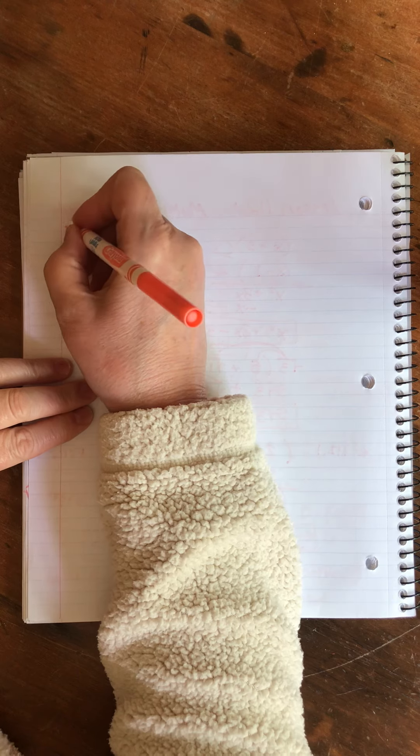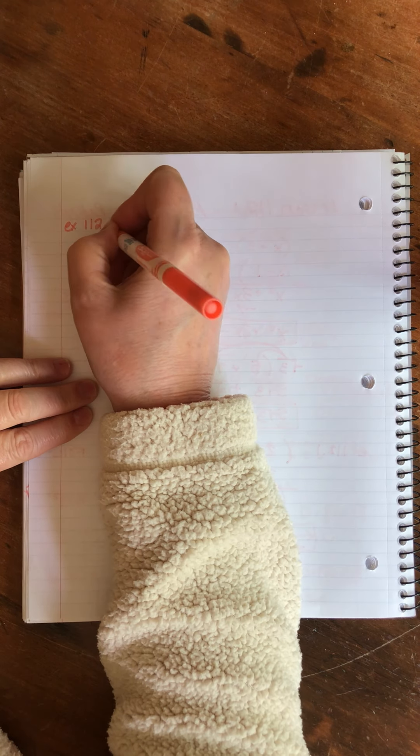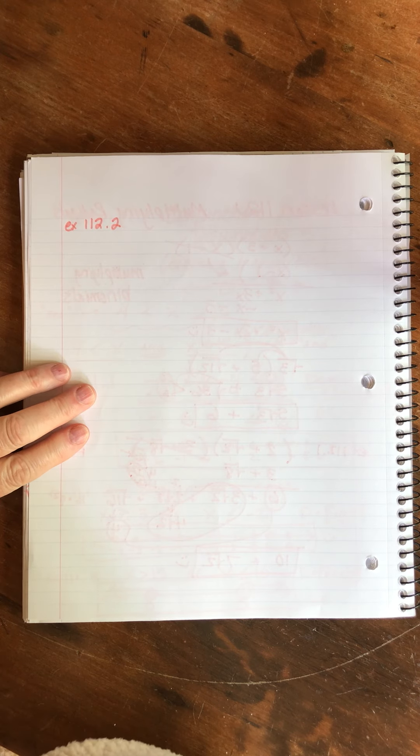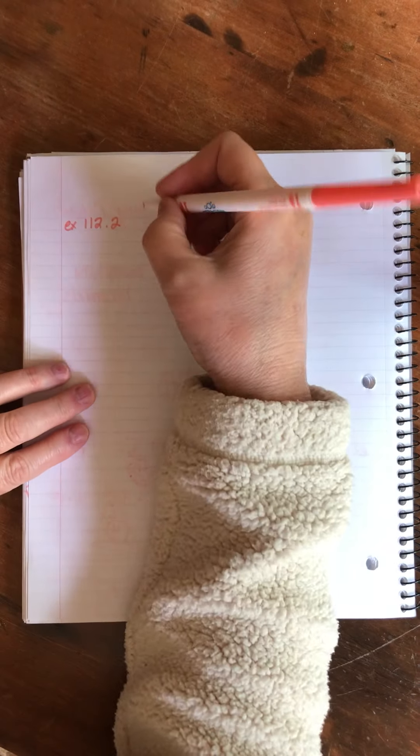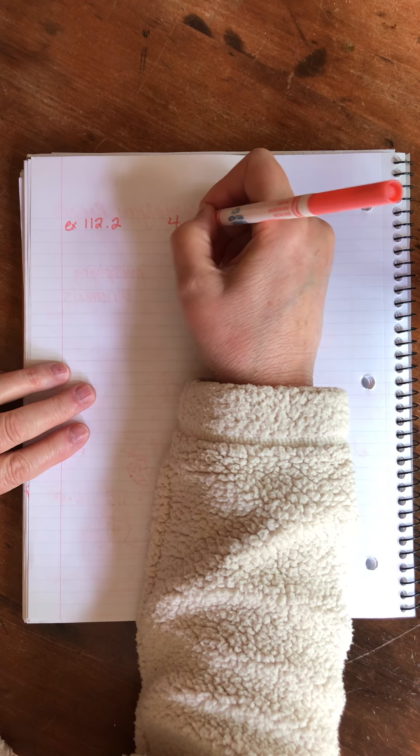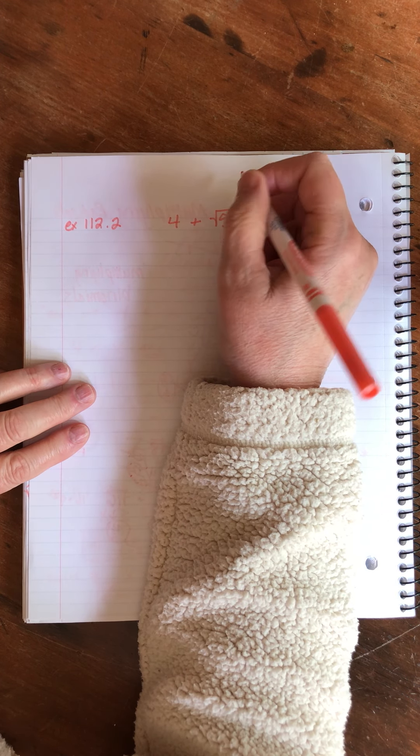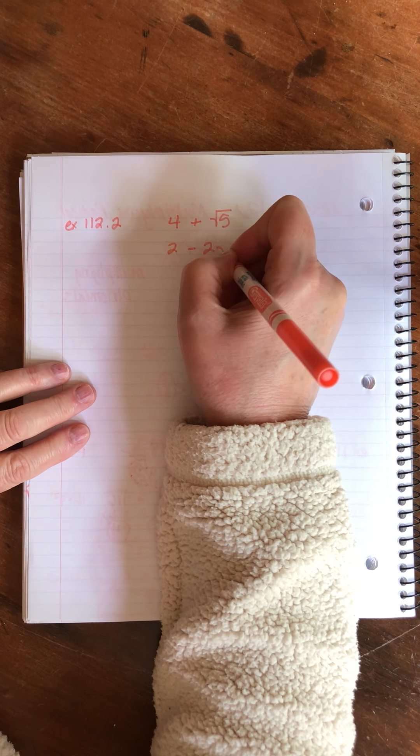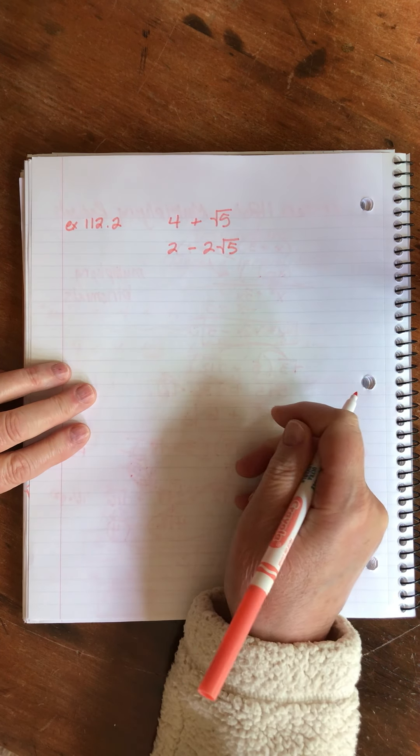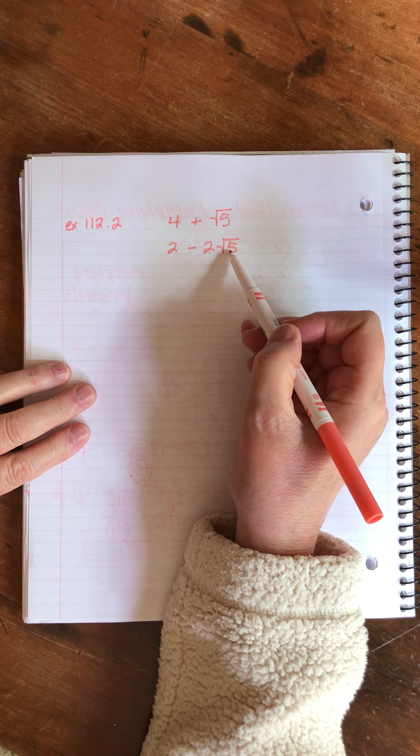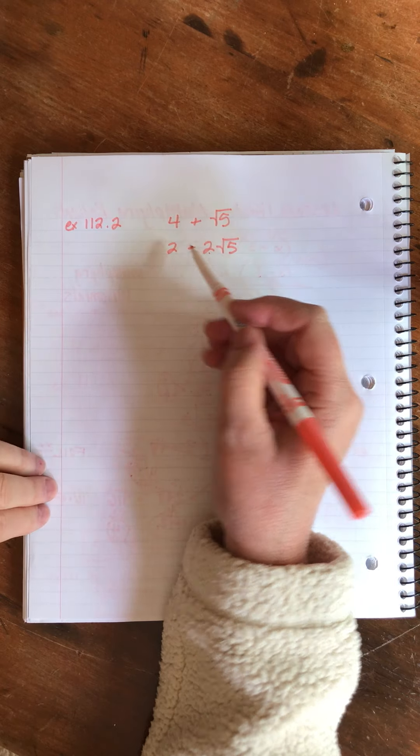Example 112.2: multiply. John gives us that side-by-side presentation. I'm not going to copy it that way anymore because you know why. 4 plus square root of 5, times 2 minus 2 times the square root of 5. This one's a little different in that we have a number in front of the square root as we multiply. That's not hard. I'll remind you how to do that.